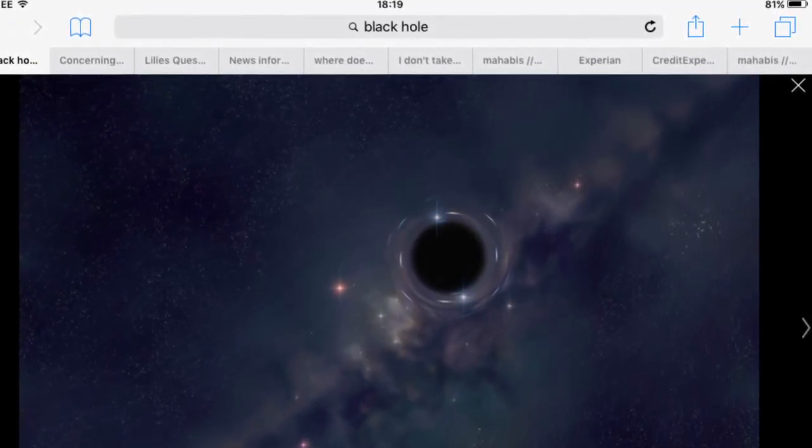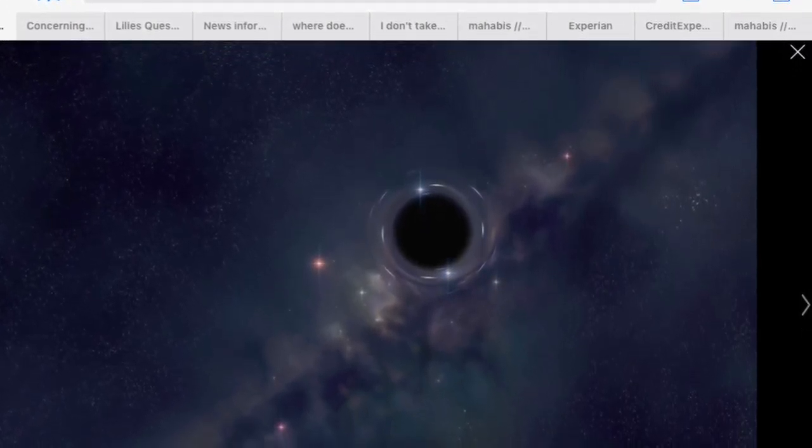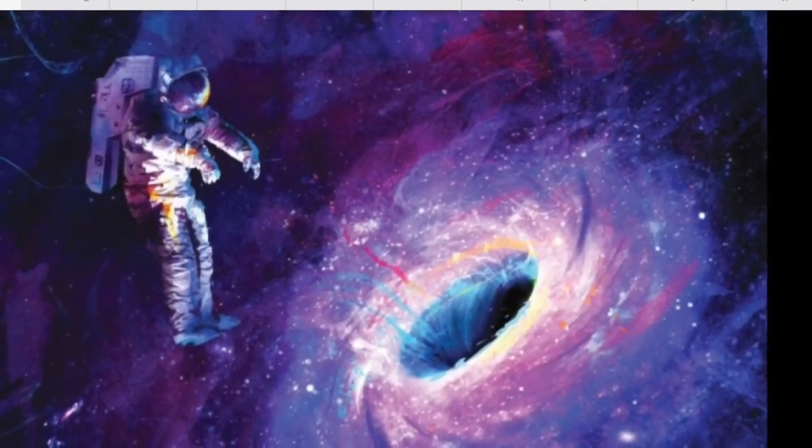Theory suggests that at the other end of a black hole is a white hole, which is the complete opposite to a black hole, which means it spews out matter and nothing can pass its event horizon.